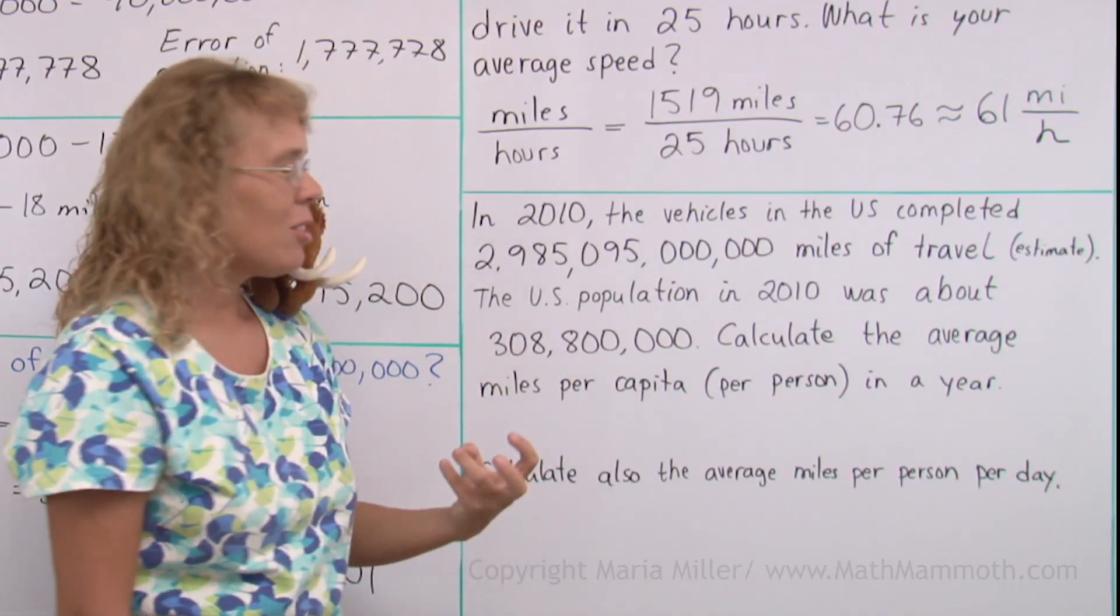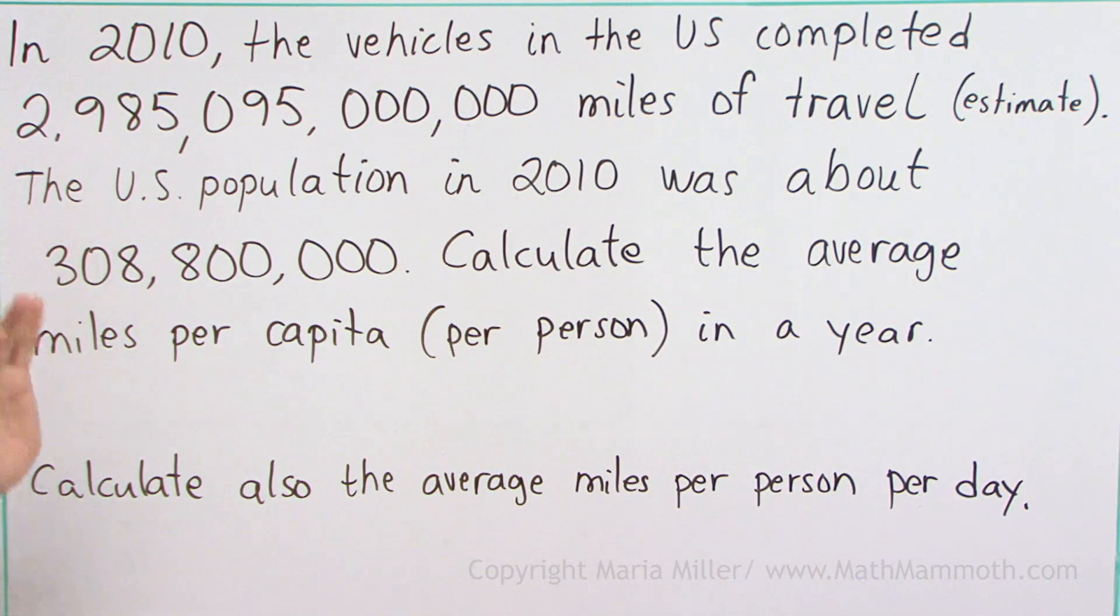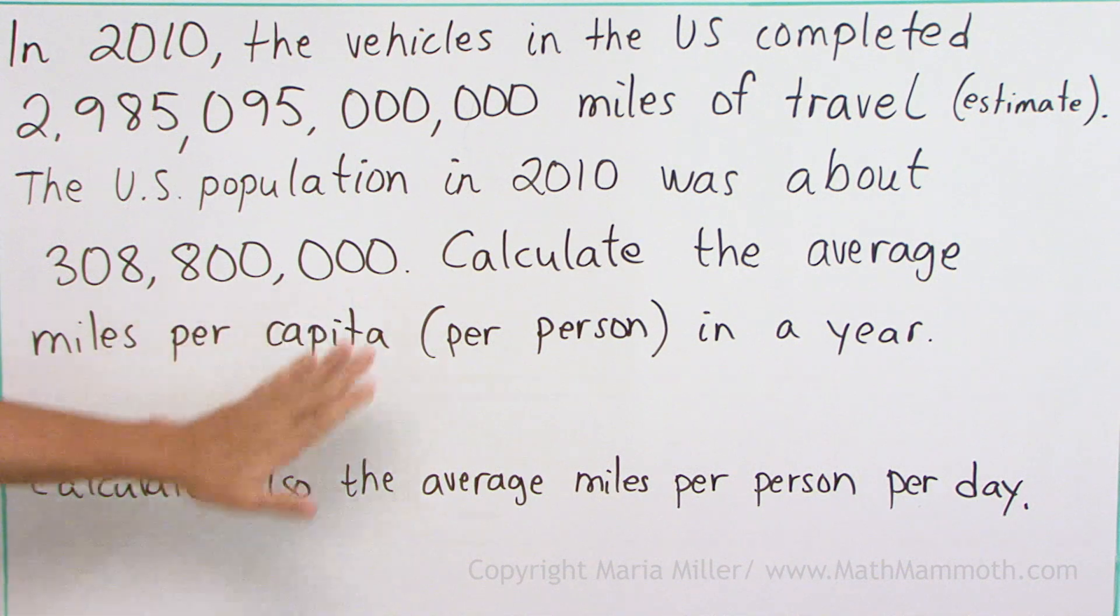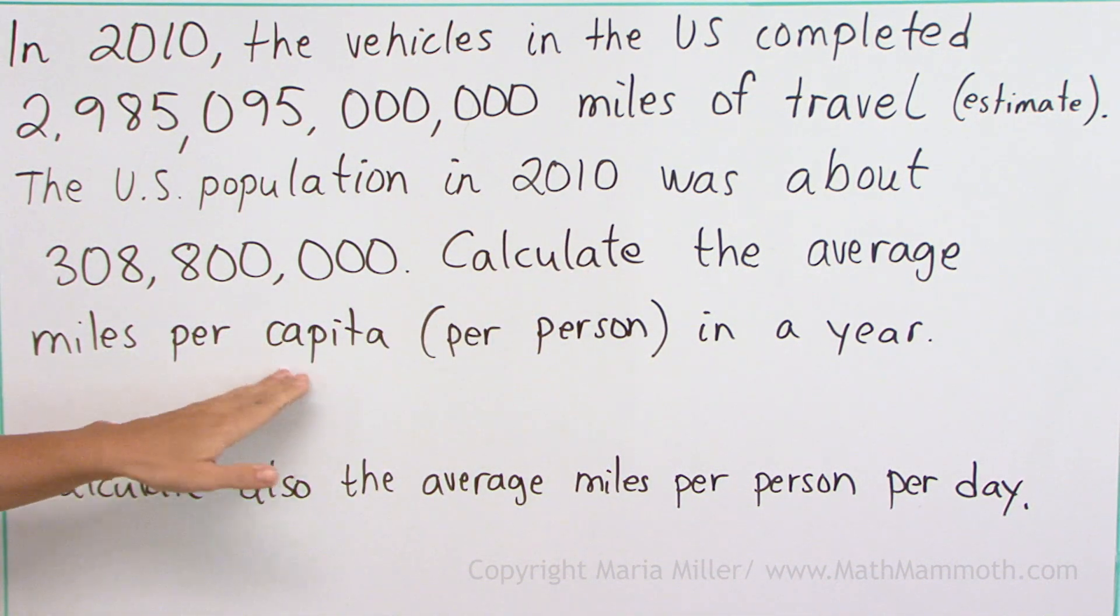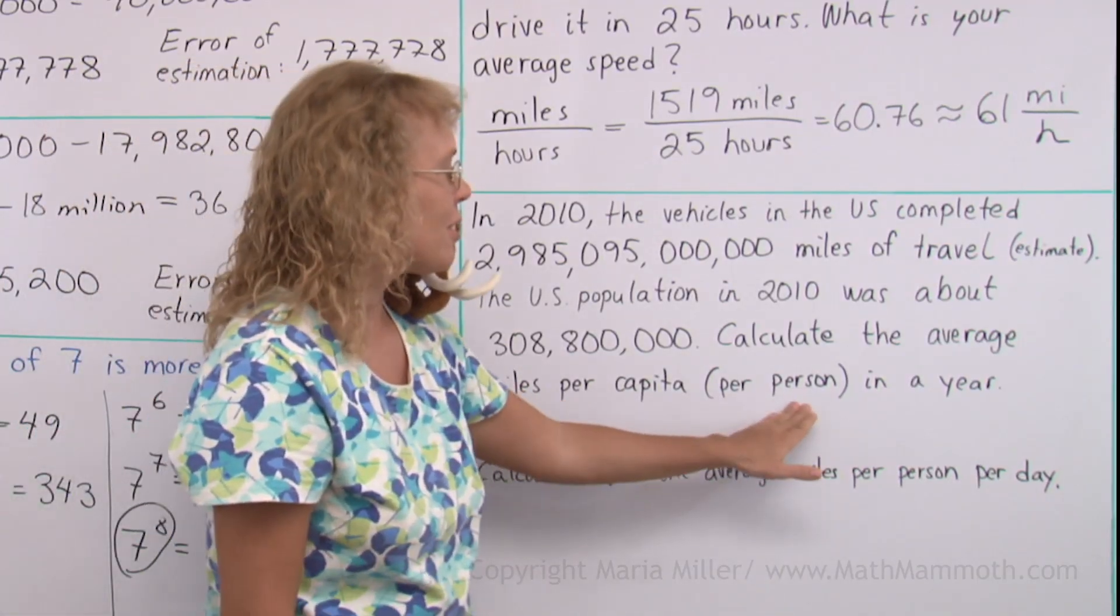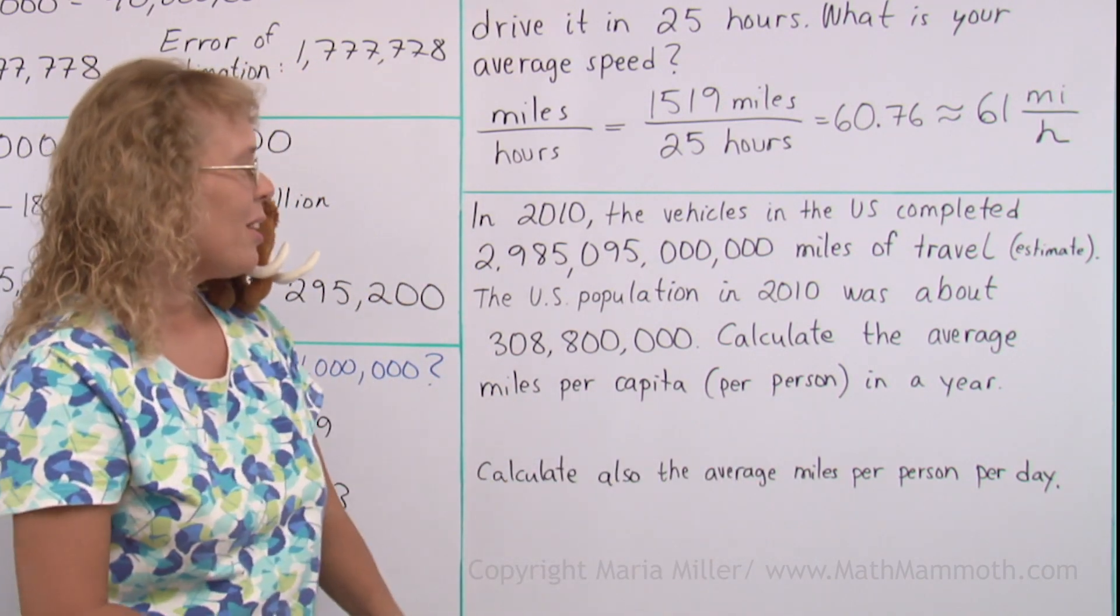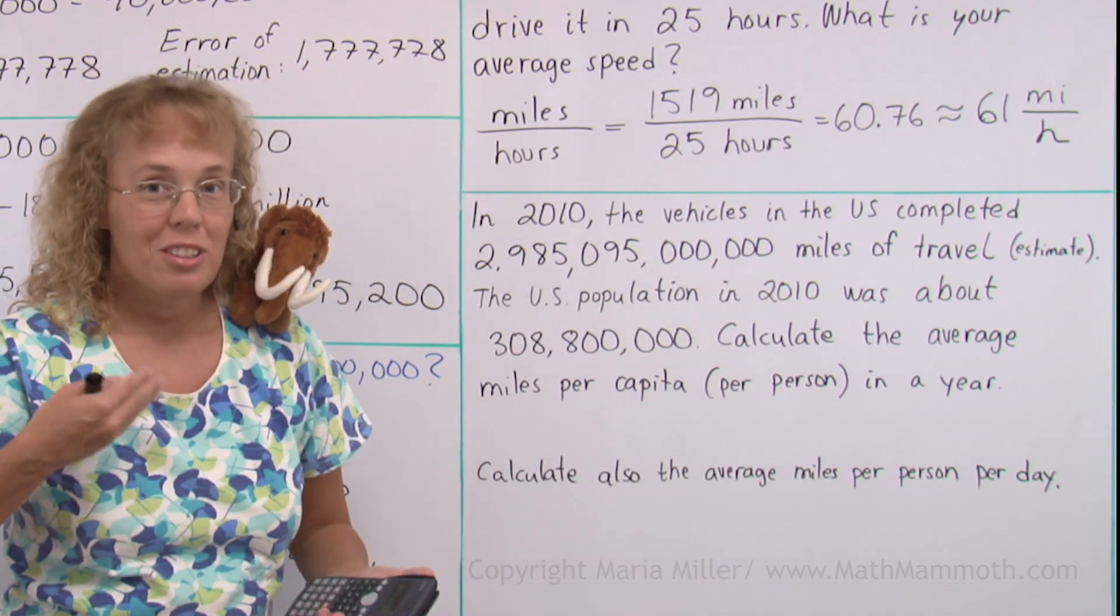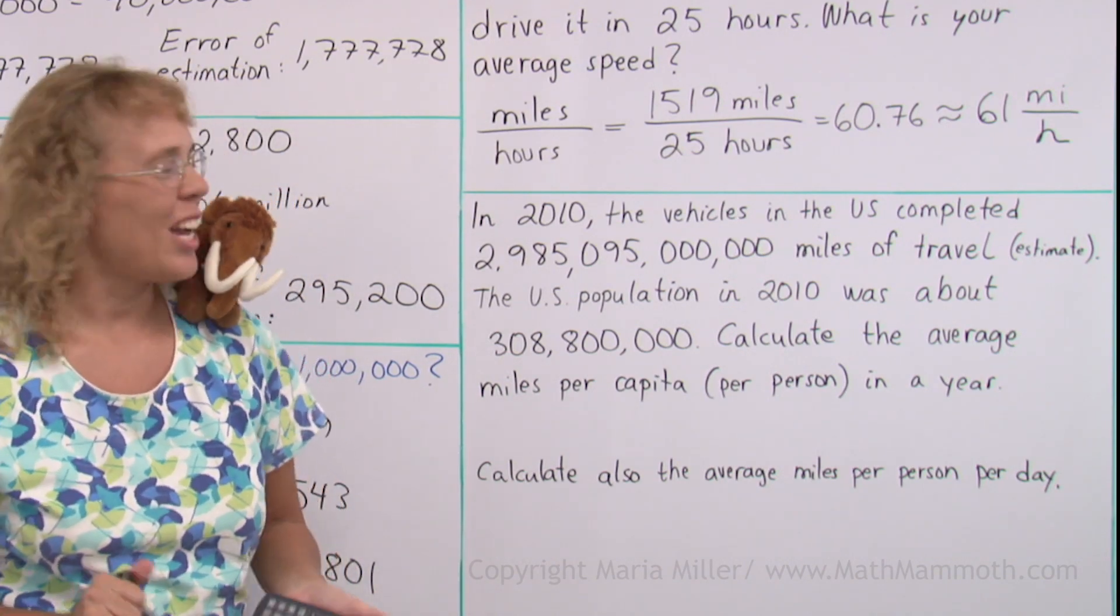That's how many miles all the vehicles traveled. Now, the US population in 2010 was about 308 million, 800,000. Calculate the average miles per capita, which means per person, miles per person in a year. So how many miles did each person travel in the US in one year, on average?